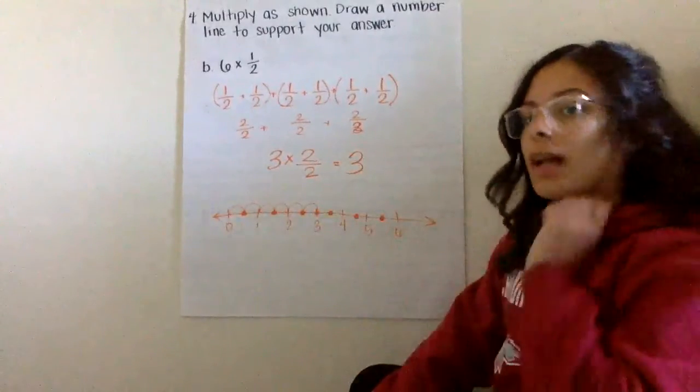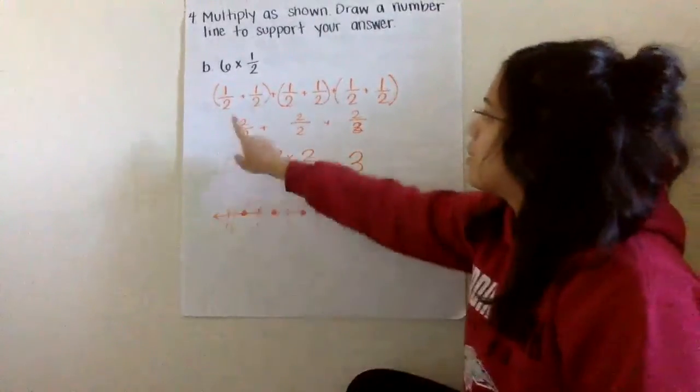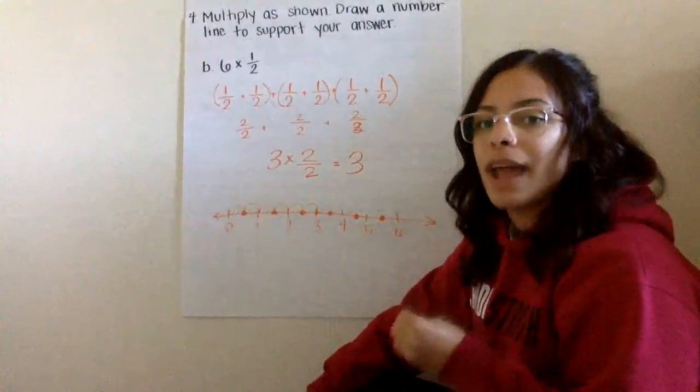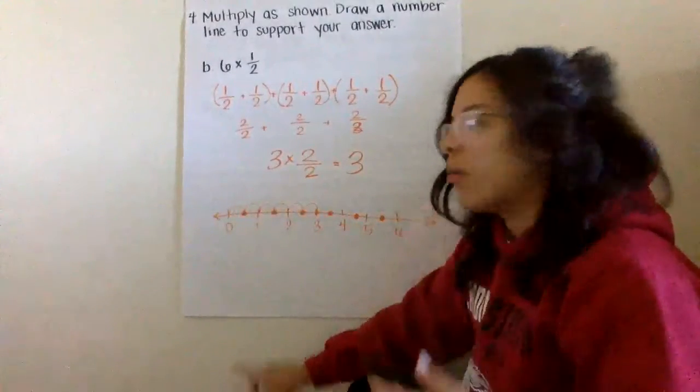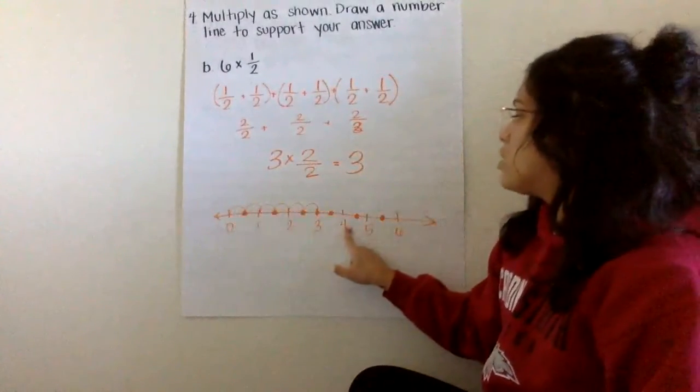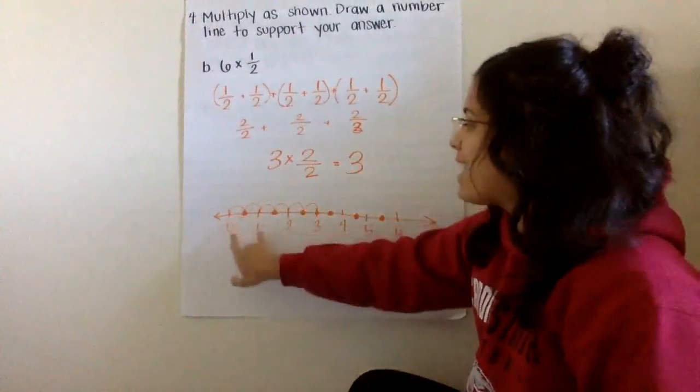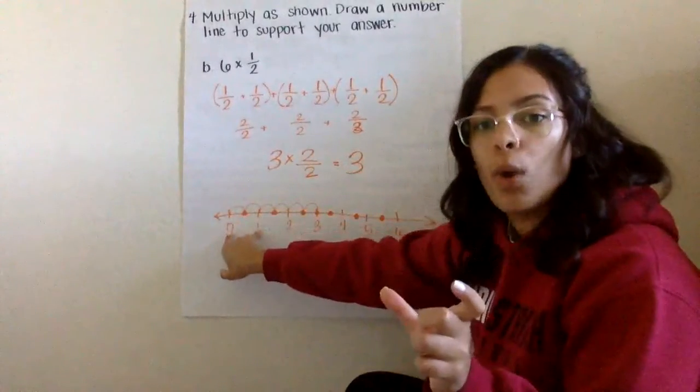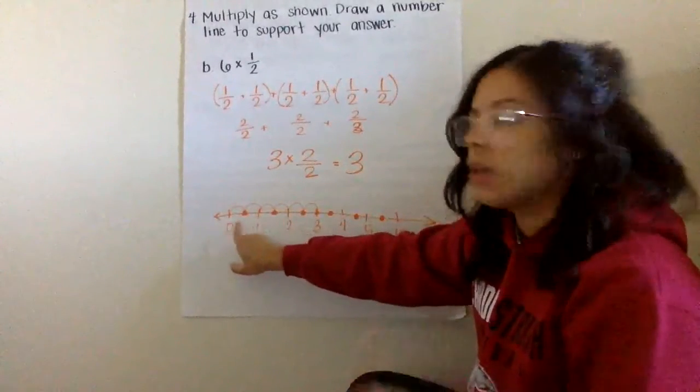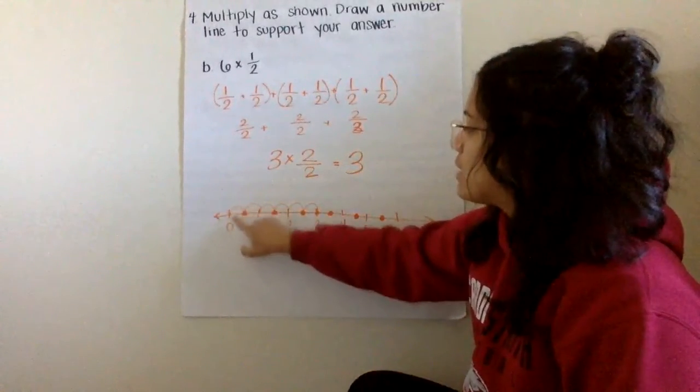When I look at my number line, I also recognize that pattern as well. Six copies of size one half is just repeatedly adding one half. So I went ahead and I partitioned my number line. And then I partitioned each one whole into two halves. And I added on each half six times.